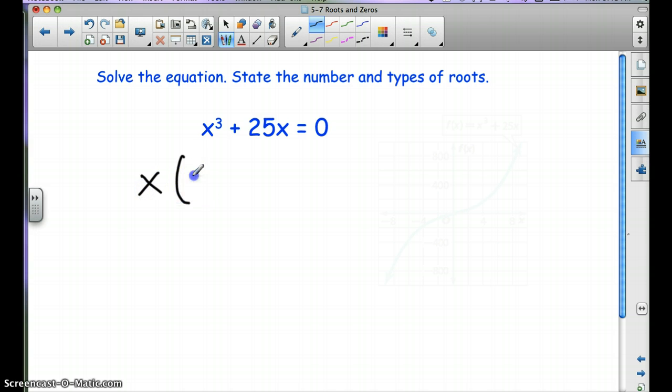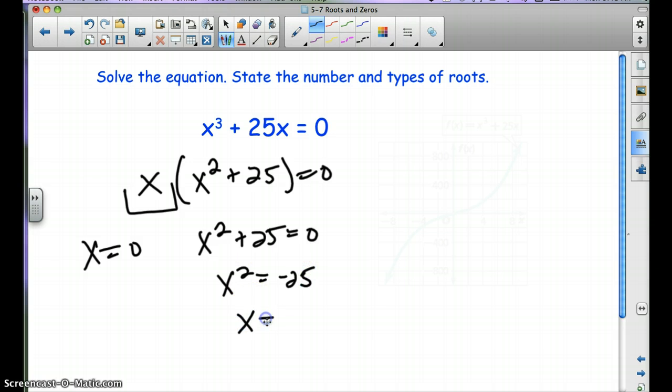So you can take out an x here. So we have x squared plus 25 equals 0. We've got to set this x equal to 0. So that's one of our roots. And then we have x squared plus 25 equals 0. x squared equals negative 25. So x is going to equal plus or minus 5i because we square root both sides.